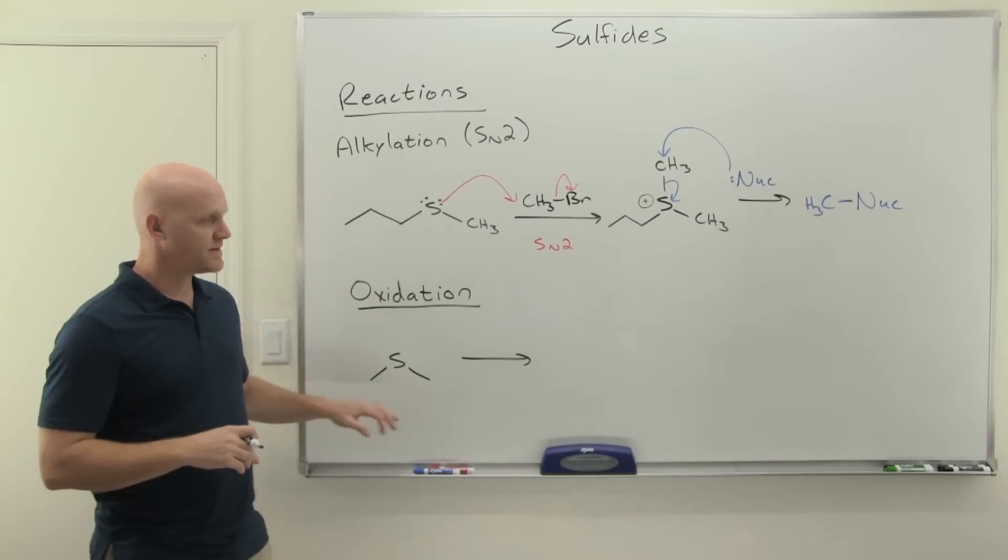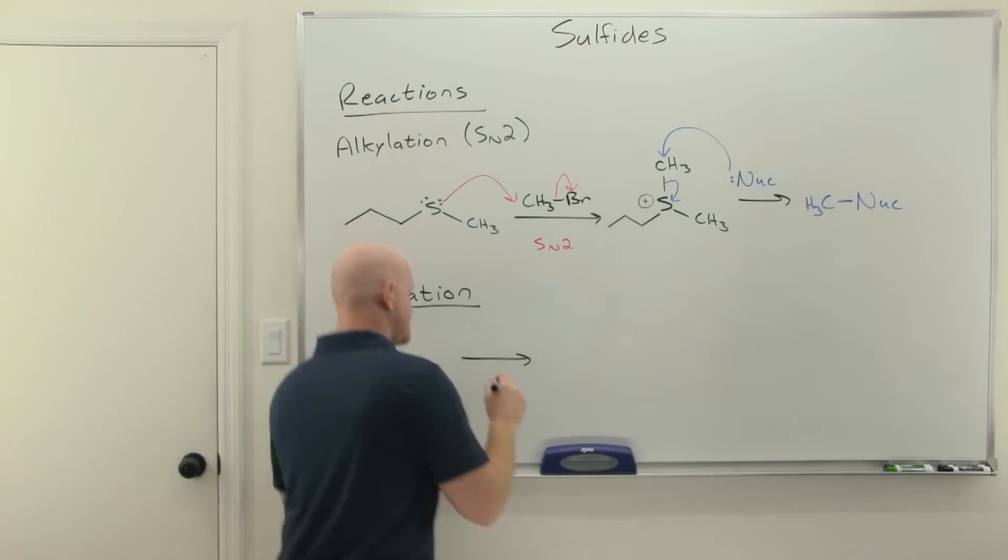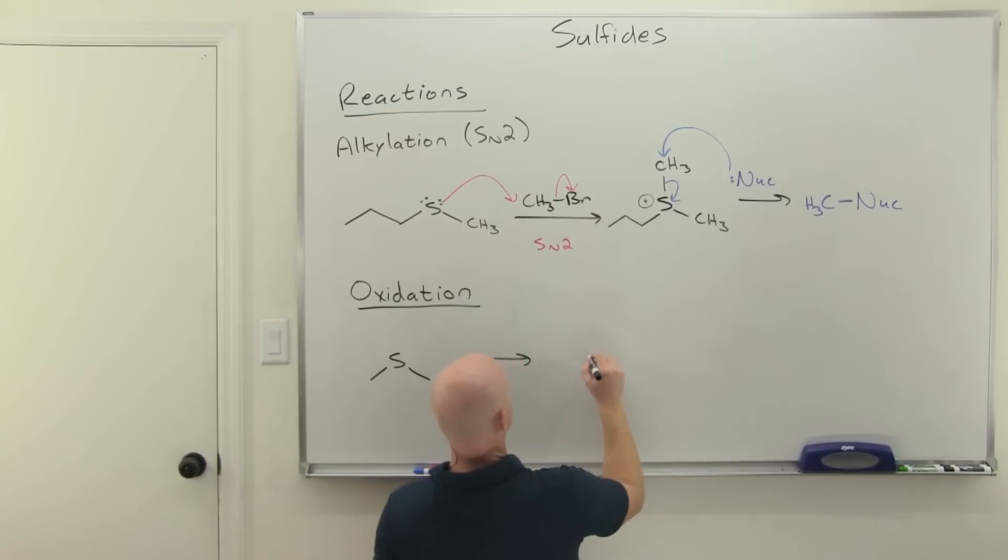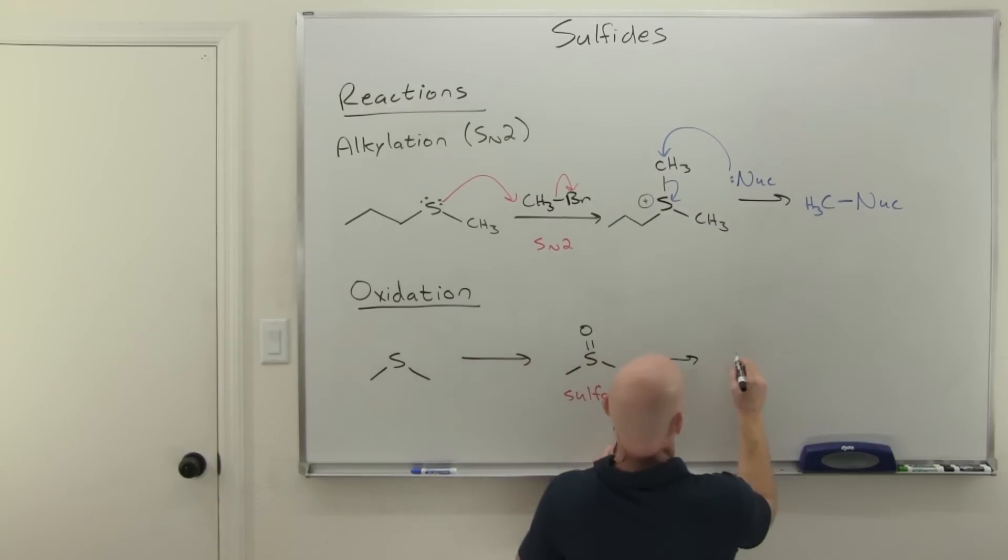Alright, so if we look at the oxidation of a sulfide, two steps of oxidation are possible. So after one step of oxidation here, we form a sulfoxide. And after an additional step of oxidation here, notice more bonds to oxygen here, so more oxidized, we form a sulfone.